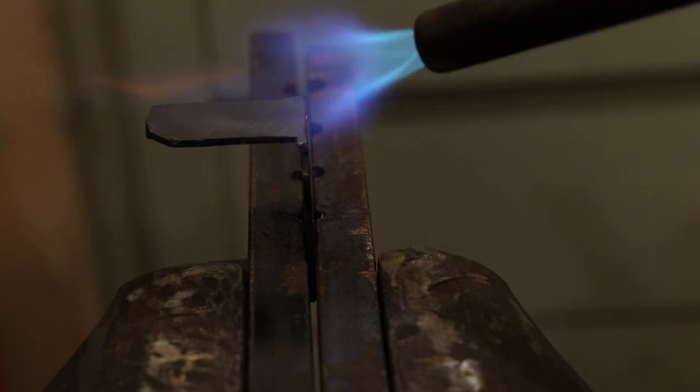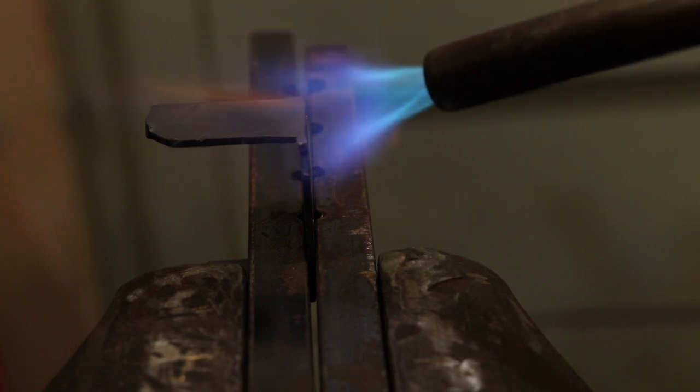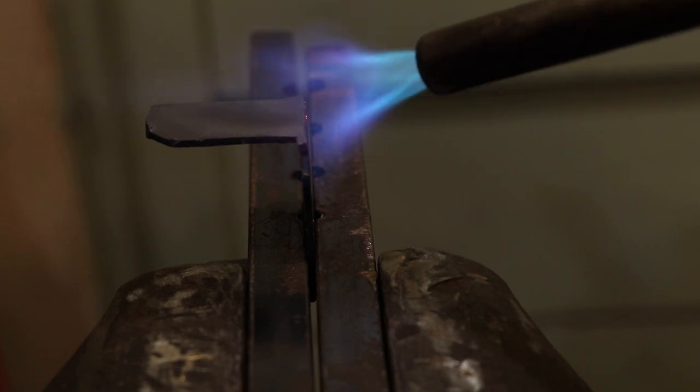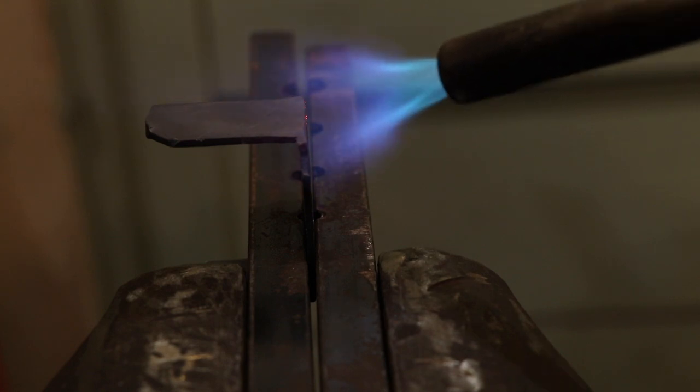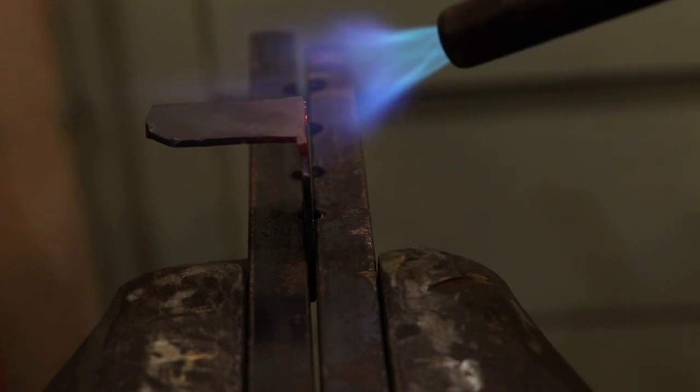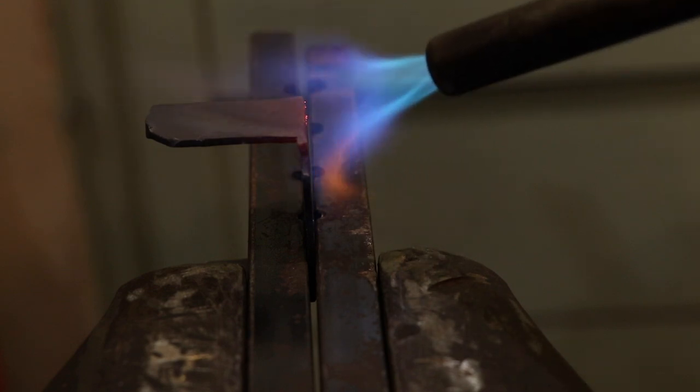At this point it's really tempting to keep on hammering because you can see that the shape is almost there and you figure that a couple more hammer blows will finish the job, but it's really important to stop at this point and to anneal that corner. Annealing restores the malleability of the metal.